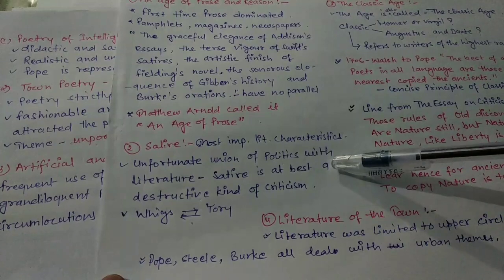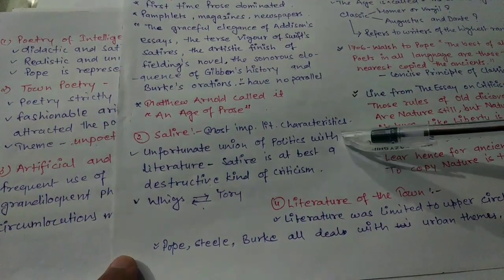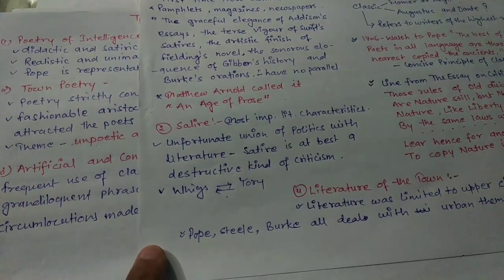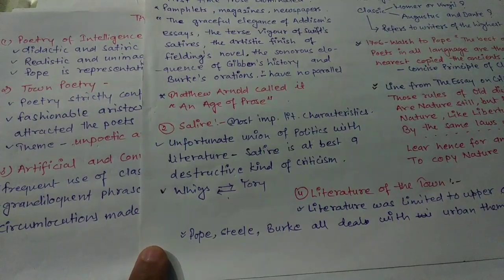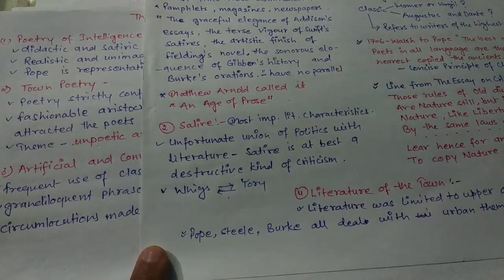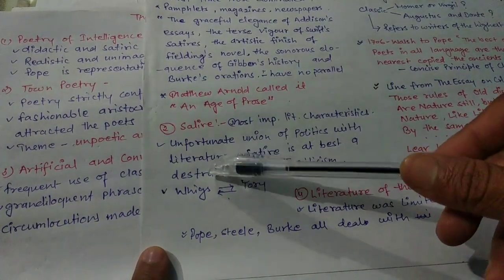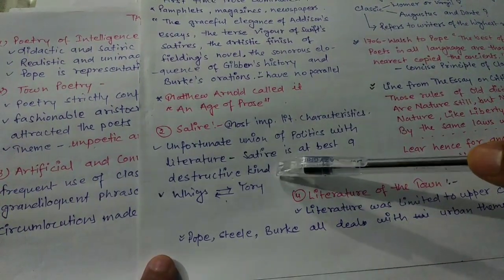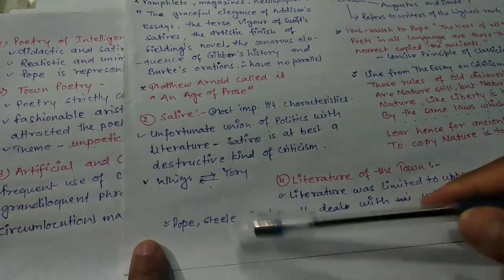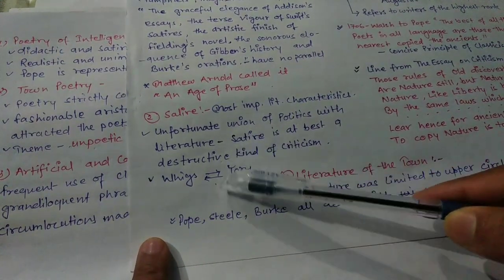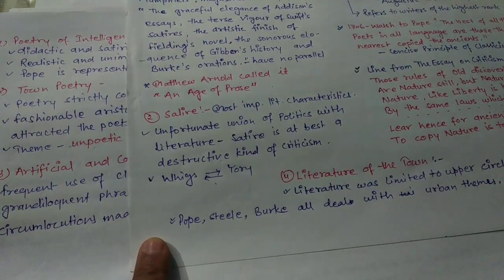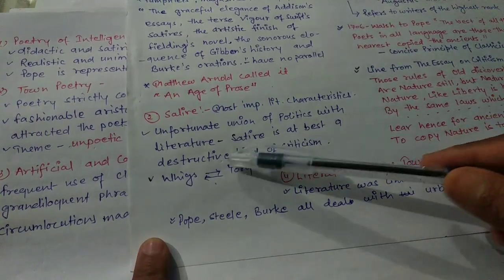Satire was the most important literary characteristic, arising from the unfortunate union of politics with literature. There were two groups — the Whigs and the Tories — who dominated the Age of Pope and the later Age of Transition. Their union with literature was not constructive but rather destructive. Whigs were writing satires to defame Tories, and Tories were composing poetry and other works to defame Whigs.